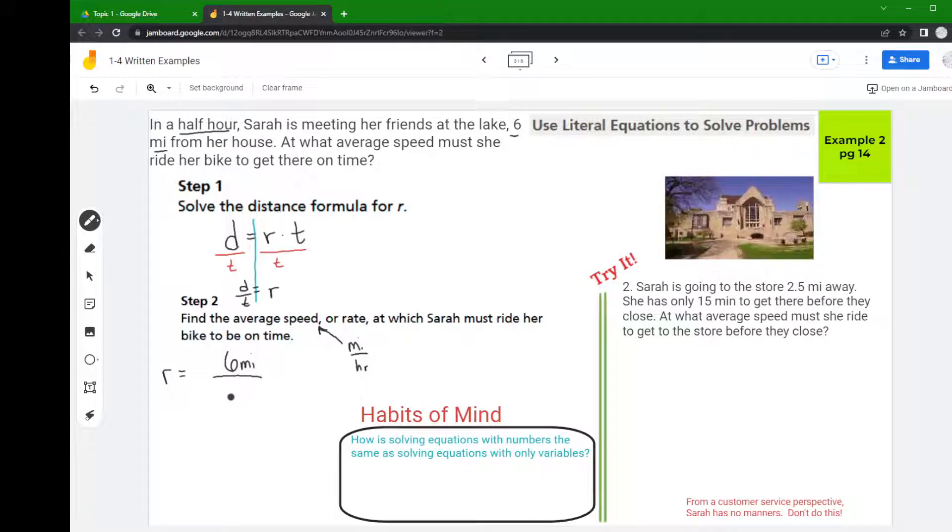So this is a half hour, so I could put one half or I could put 0.5, whatever floats your boat. But you don't want to put 30 minutes. If you put 30 minutes, it becomes miles per minute and that's not really a speed that we measure in very often.